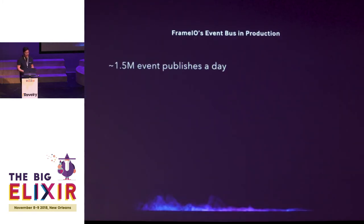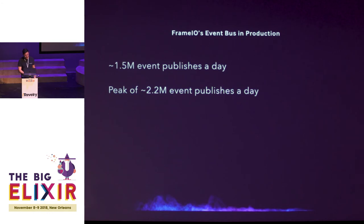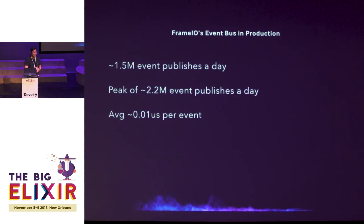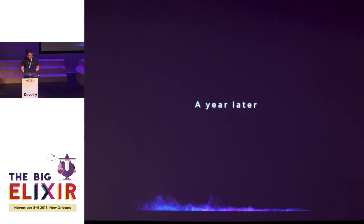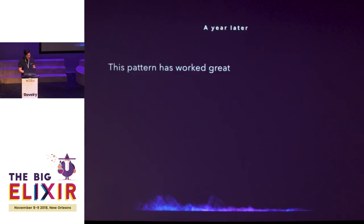Our event bus processes around 1.5 million events per day, at a peak around 2.2 million. It takes about 0.01 nanoseconds to consume each event, which means all our background jobs — emails, push notifications — happen in that short span of time. Our P99 for our API over the last three months has been 101 milliseconds, which is pretty awesome. And a year later in retrospect, this pattern actually works really great.